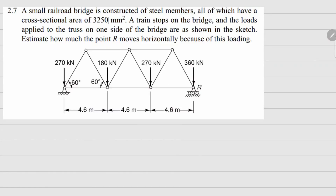This is problem 2.7. Here we have a small railroad bridge constructed with steel members. The cross-section area for all of them is 3250 mm². The load due to a train is given as point loads: 270, 180, 270, and 360 kN. We need to figure out how much point R is moving in the horizontal direction.